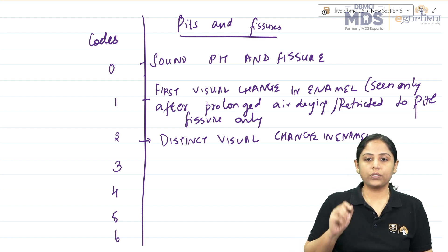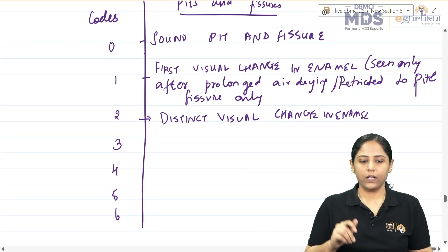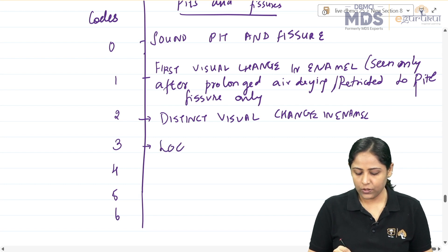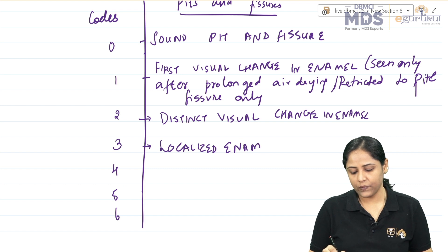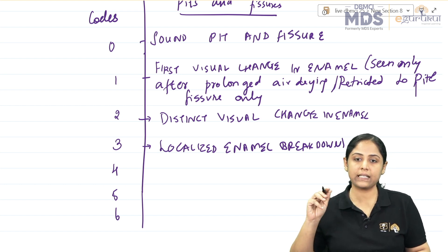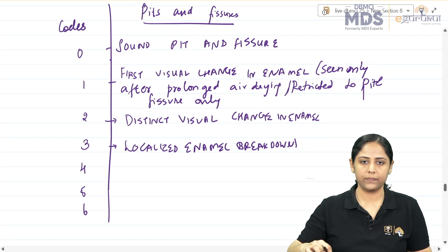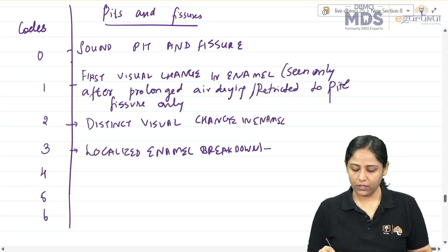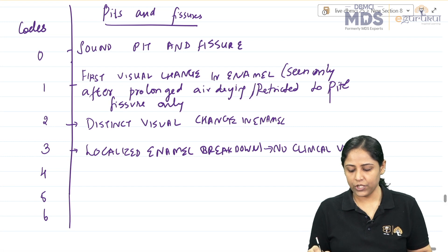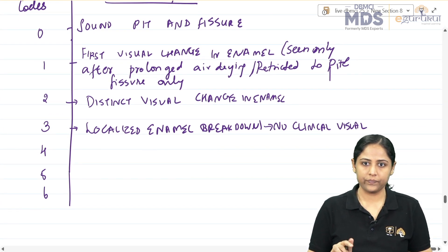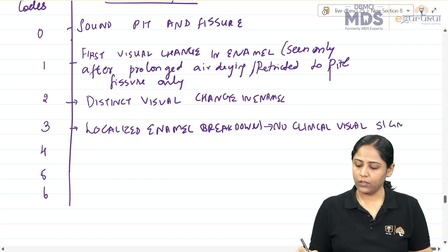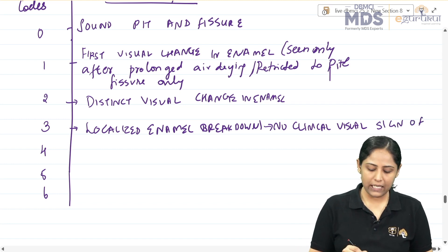Score 3 is localized enamel breakdown, with no clinical visual sign of dentinal involvement.